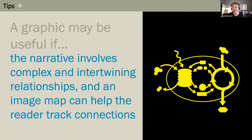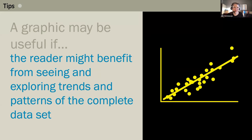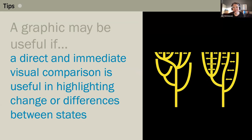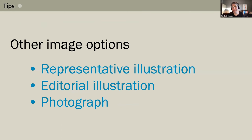A graphic is useful if the narrative involves complex and intertwining relationships and an image map can help the reader track connections, like a process diagram. Or if the reader might benefit from seeing and exploring trends and patterns in the complete data set rather than being served a few key numbers in the text. Or when a direct visual comparison highlights change or differences between states — such as competing hypotheses or before-and-after views. I'm not a fan of building a graphic just because there's room or money to spare; if engagement is your only goal, consider whether a representative illustration, editorial illustration, or photograph might be a more fitting solution.